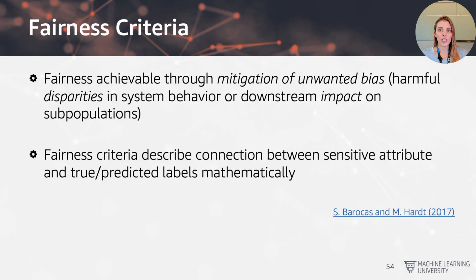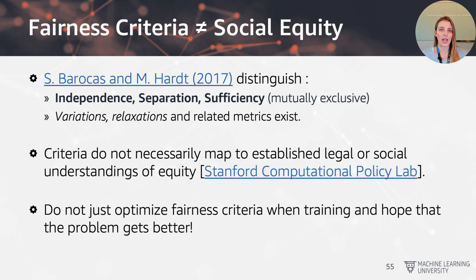Fairness criteria give us a way to describe a connection between the sensitive attributes or groups in our data and the true or predicted labels mathematically. Barocas and Hardt introduced a taxonomy and placed the different criteria in the categories of independence, separation, and sufficiency. There are also variations and relaxations of the criteria to make them practically implementable in machine learning.